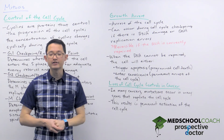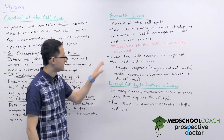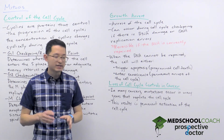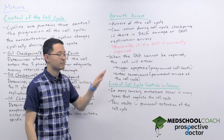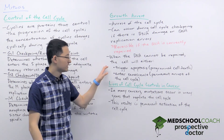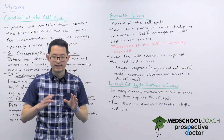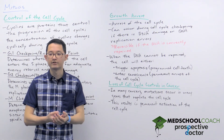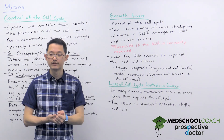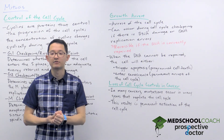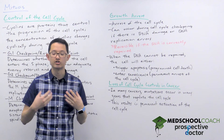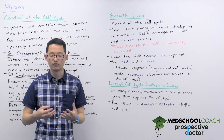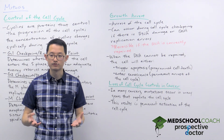However, there are situations when the DNA cannot be repaired. When that happens, the cell will either trigger apoptosis — the cell decides it should not continue. Apoptosis is called programmed cell death and it's a very regulated process where a cell essentially destroys itself from the inside, preventing any of its contents from affecting nearby cells.